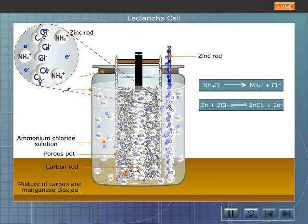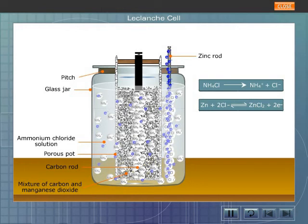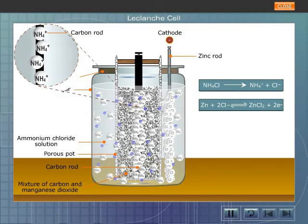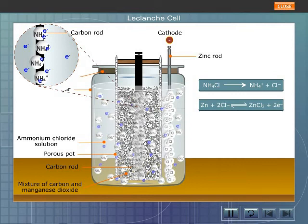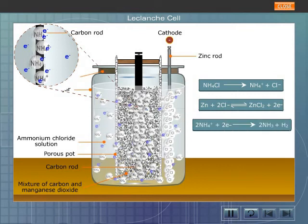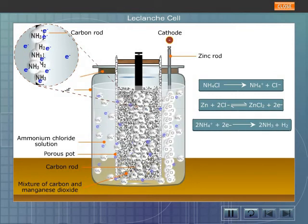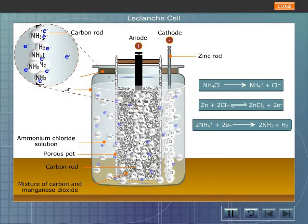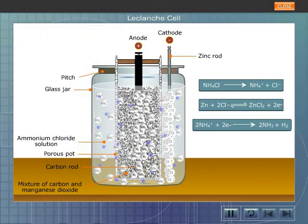On the other hand, ammonium ions move to the carbon rod. The free electrons of the carbon rod neutralize the ammonium ions, forming ammonia and hydrogen gas. As a result, the carbon rod attains positive charge due to deficiency of electrons. Thus, the carbon rod becomes the anode, the positive electrode.